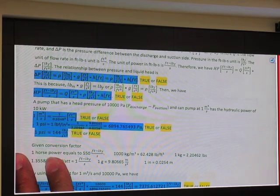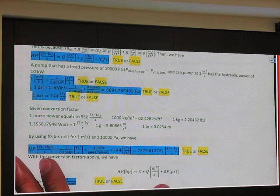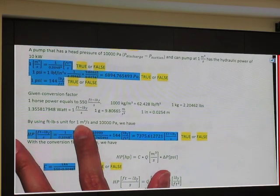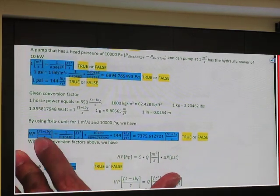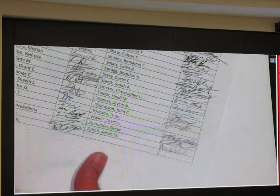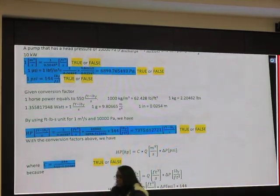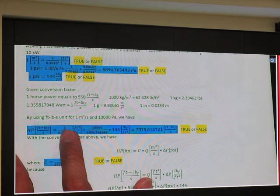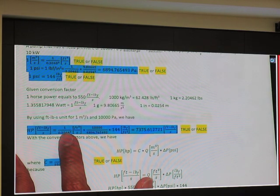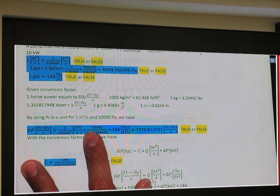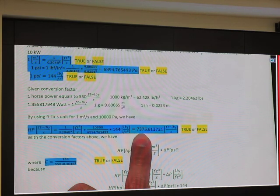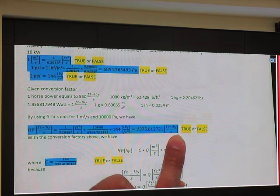This is a conversion factor. By using foot pound force per second unit, one cubic meter and 10,000 Pascal, we have hydraulic power in that unit equal to volume flow rate, this is volume flow rate in cubic meter per second. The second one is pressure drop in pound force per square foot. Then I get that much, and it is true. Any questions on how I do substitution over here?